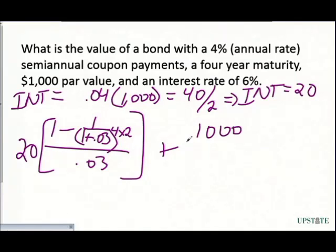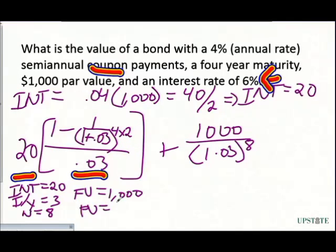Plus our $1,000 face value divided by 1.03 to the 8th power. Right, plug all that in, hit the compute, and we end up with $929.80.